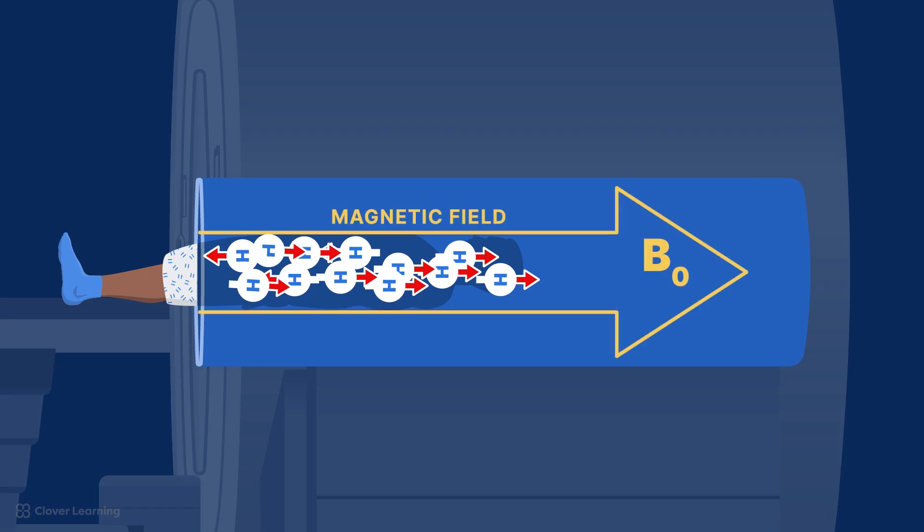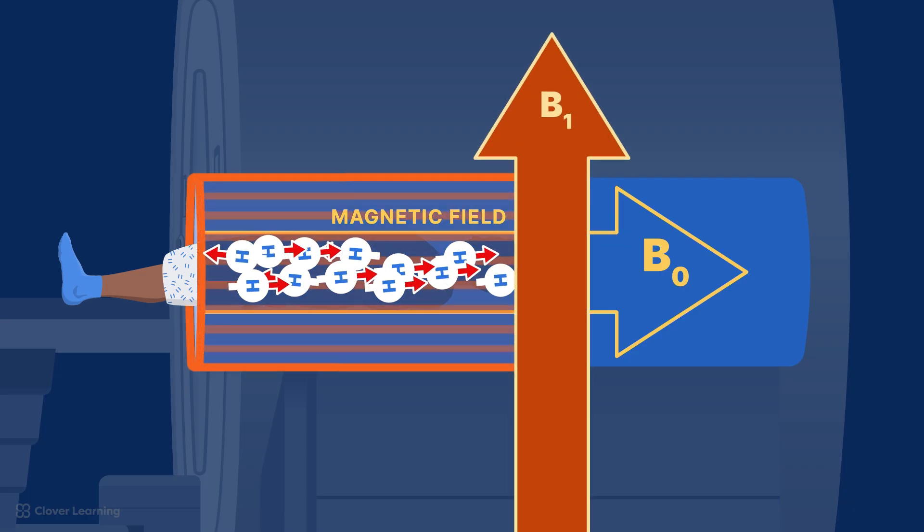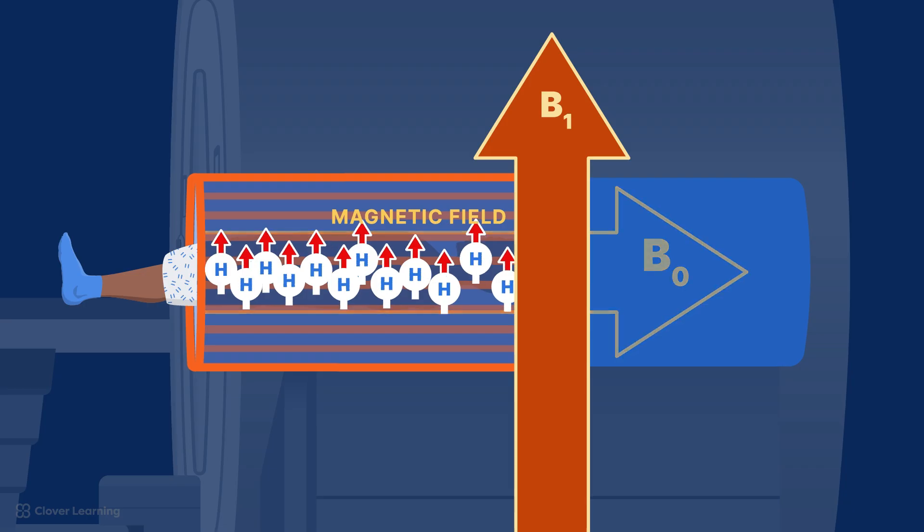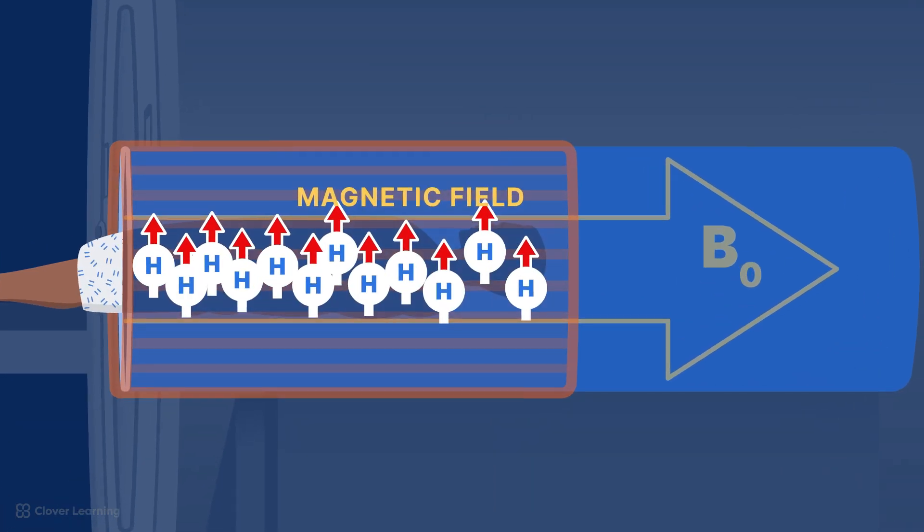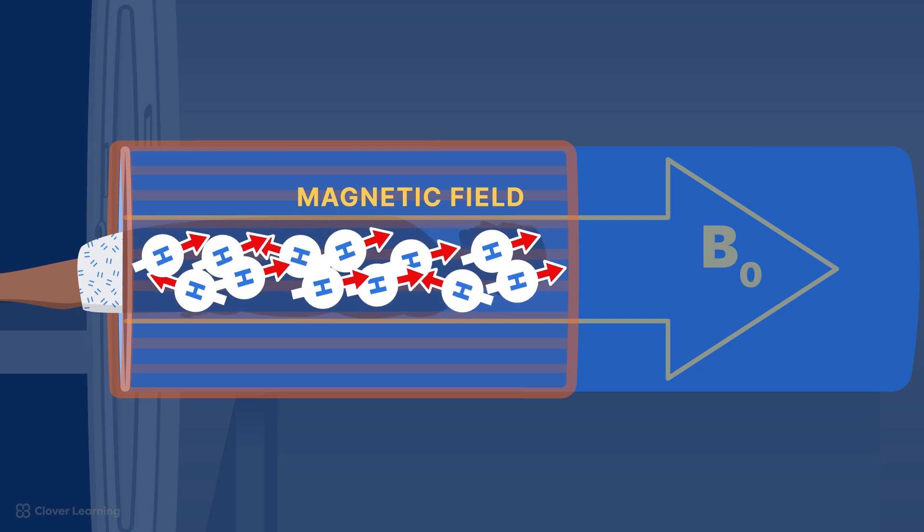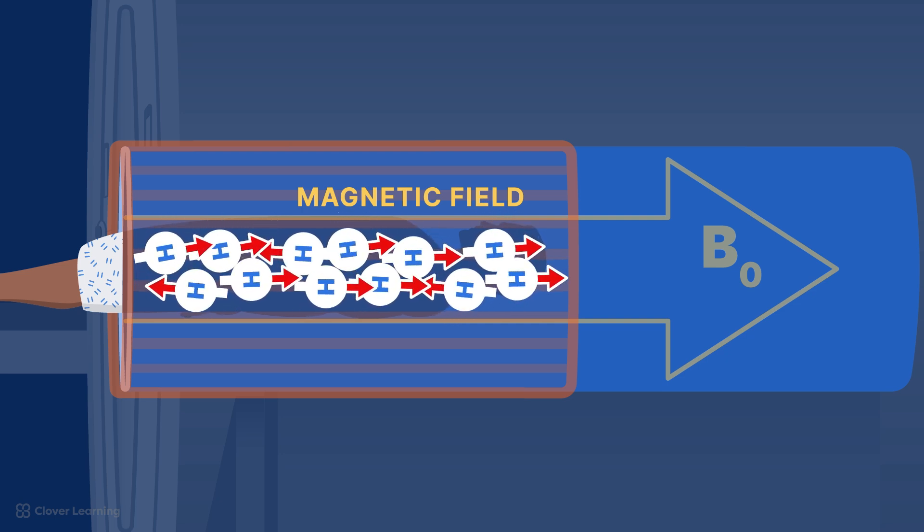When an RF pulse is sent, these protons are excited, reducing the influence of B sub-zero, and the protons are pushed 90 degrees into the transverse plane. As the protons lose the energy from the pulse to the lattice, they recover or increase their magnetization and return to the longitudinal plane.